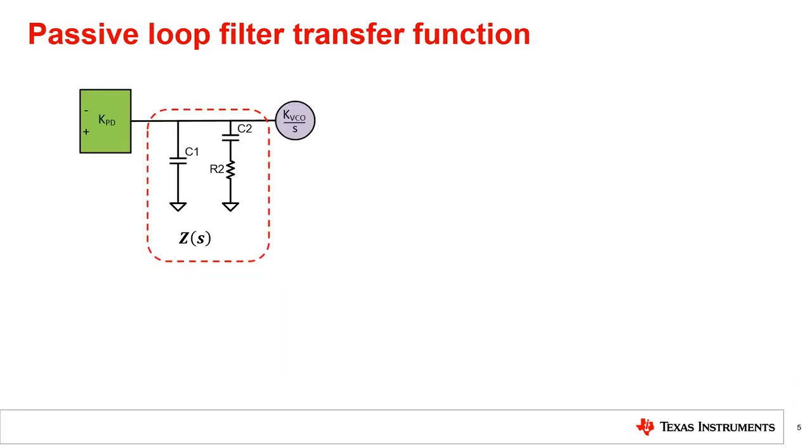We've discussed the transfer function on almost all the blocks of the PLL. Let's take a closer look at the transfer function of the loop filter. For simplicity, let's start with the transfer function of a second order loop filter that consists of a capacitor to ground and a capacitor and a resistor in series to ground, C2 and R2. The transfer function, Z(s), of a second order loop filter is illustrated here. Here you see the zero on the top which is R2 and C2 and then you see also there's a pole at zero and an additional pole as well formed by C1, C2, and R2.